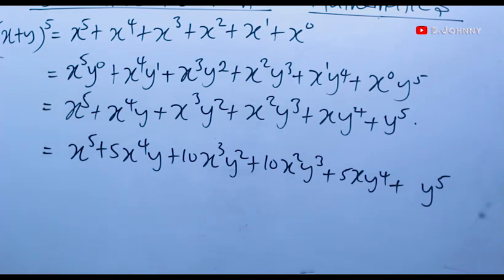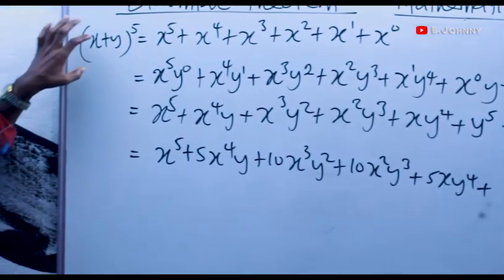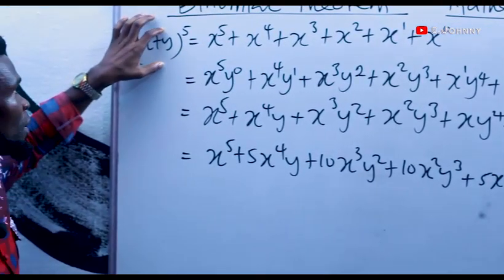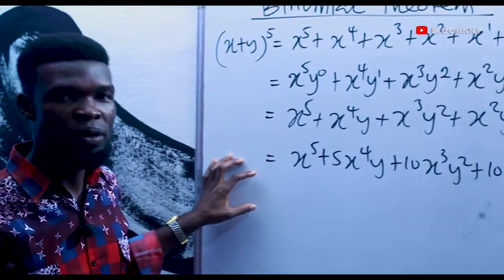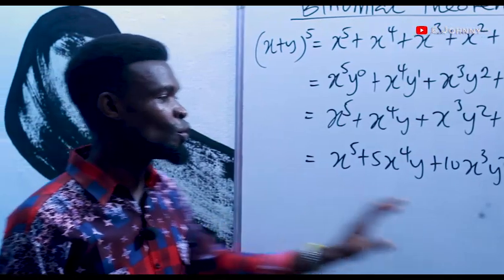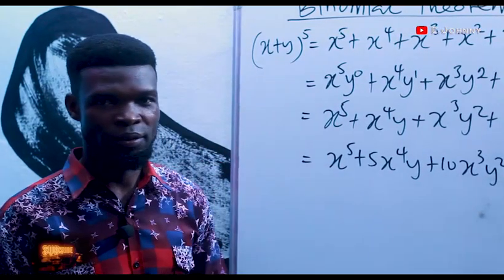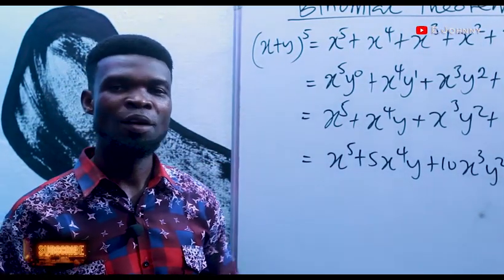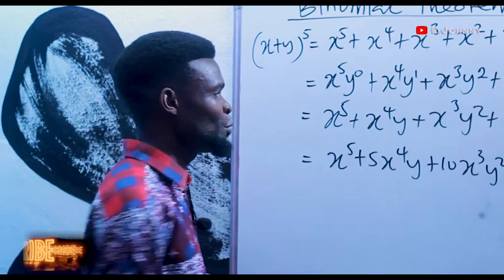Now I want to carry out this binomial expansion without making use of Pascal's Triangle. How do we do that? Follow me carefully.